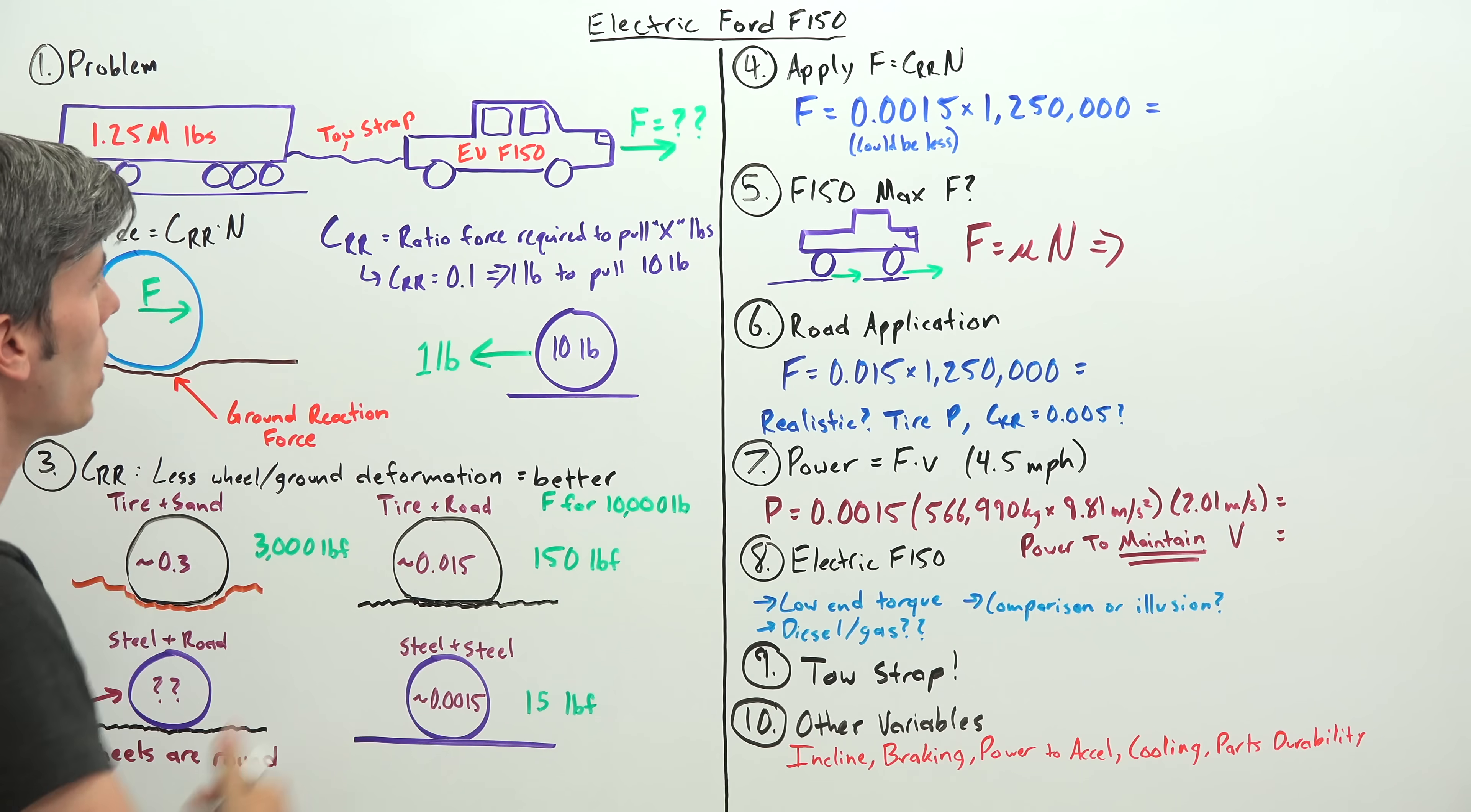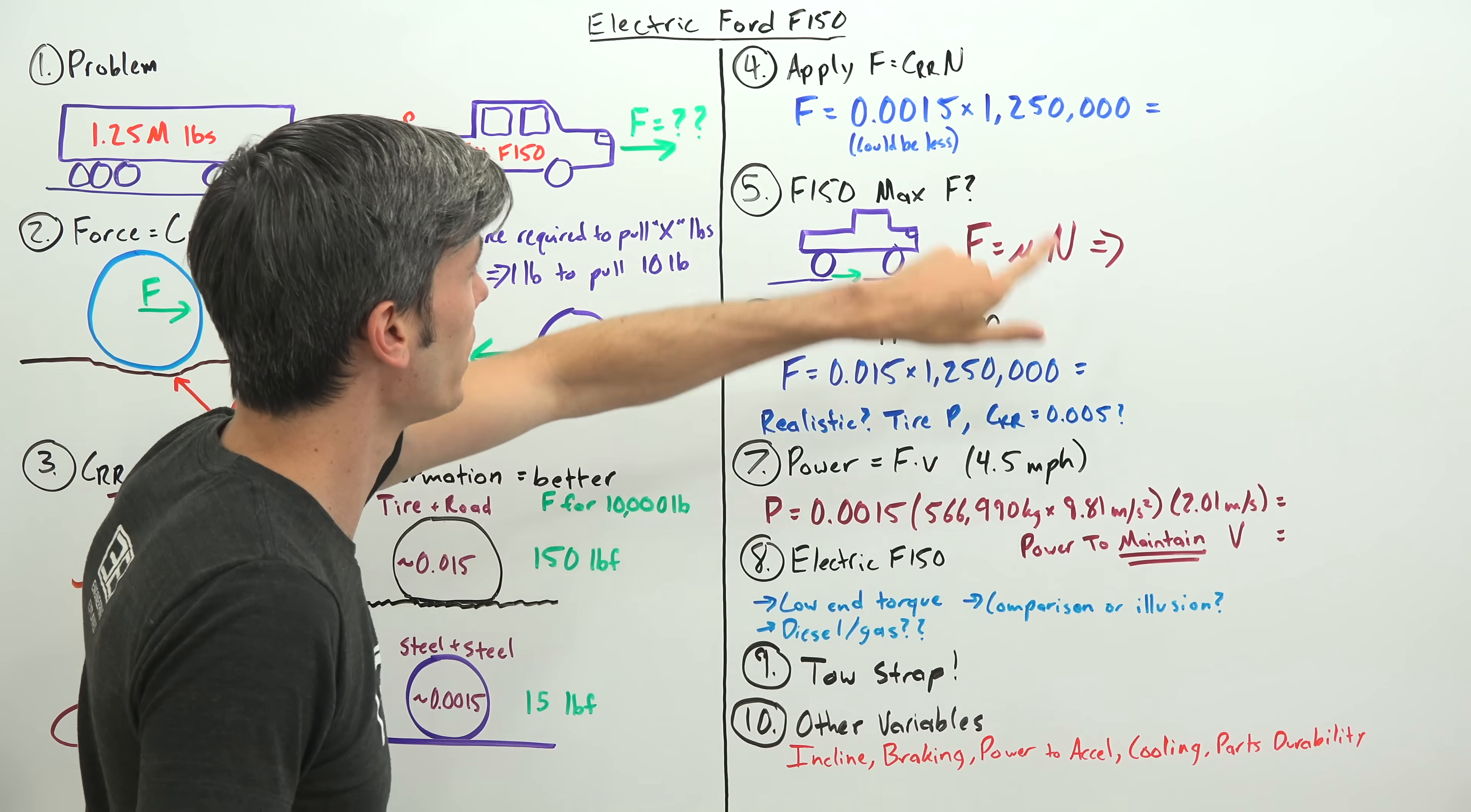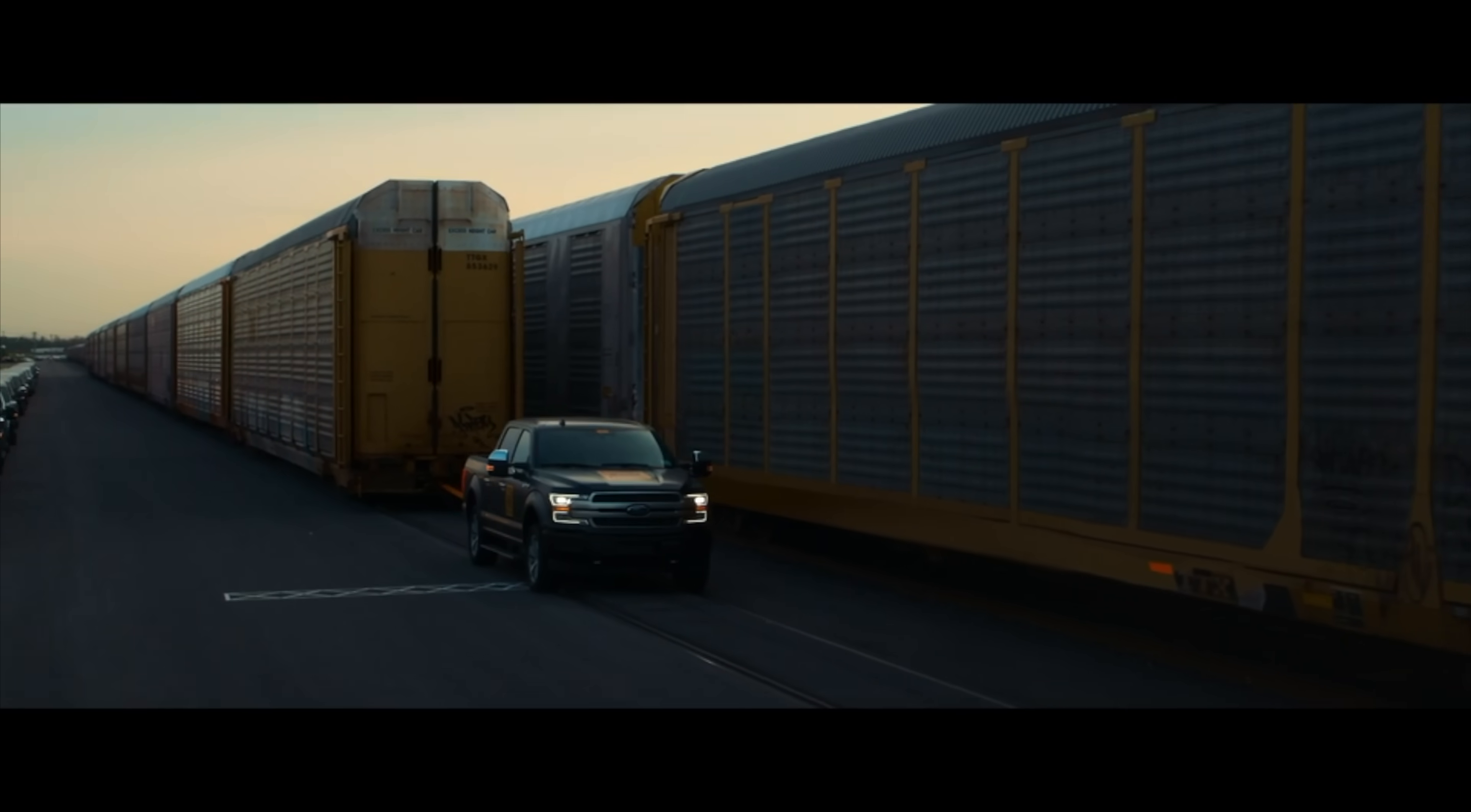Alright, let's do some math. Now that we know what all our variables are, we can calculate the force needed to pull this 1.25 million pound load. Force equals the coefficient of rolling resistance, we're using 0.0015, it could actually be less than this but we'll be conservative, and we need to pull 1.25 million pounds. So we multiply that across, and the force required is 1,875 pounds of force. Not all that insanely high of a number, but we don't yet know if this F-150 is capable of actually pulling that.